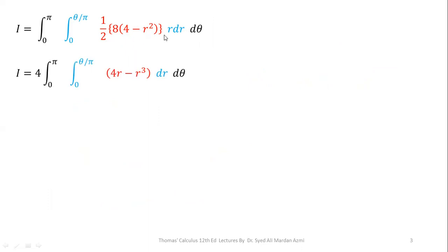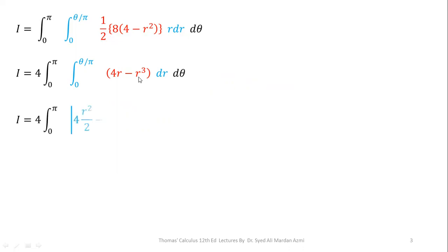Next, we perform integration with respect to R. Expanding the expression, multiplying 4 by R and R squared by R gives 4R minus R cubed. Simplifying 8 over 2 gives 4, which is a constant taken outside. Using the power rule, the integration of R is R squared over 2, and the integration of R cubed is R to the power 4 over 4.